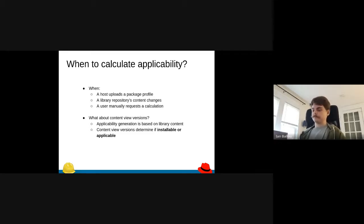The other time when we calculate applicability is when a library repository's content changes. So when you sync the repo and some new packages come in or some packages leave, we need to regenerate the applicability for all of the hosts that are even related to that repository. That could potentially be many hosts depending on setups, and it could be thousands. That's part of this design. It was important to make sure that that wouldn't be a massive hit to the system.